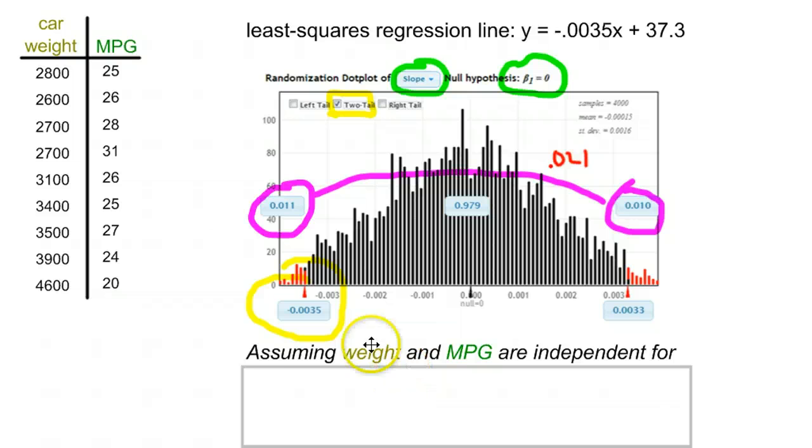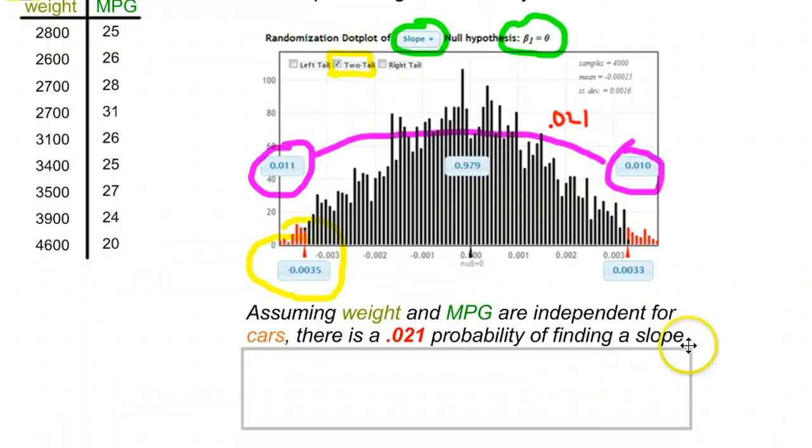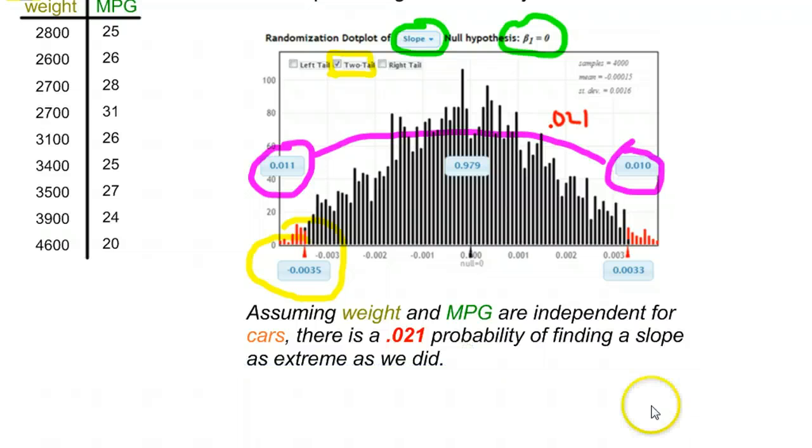So contextualizing this a little bit, we're going to assume that car weight and miles per gallon are independent for cars. We're going to say then that there is a 0.021 probability of finding a slope as extreme as we did. We assume that it's zero. That's what we mean when we say we assume that weight and miles per gallon are independent for cars. Weight and miles per gallon have nothing to do with each other, therefore the slope is zero. When we assume that, there's only a 0.021 probability of finding a slope this far away as we did. So it's fairly unlikely to assume then that they are independent. They could be independent, and there's a 2% chance we would get data that looked like we did. But more than likely, weight and miles per gallon do have something to do with each other in most vehicles.